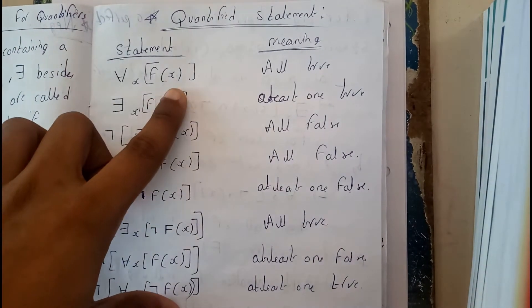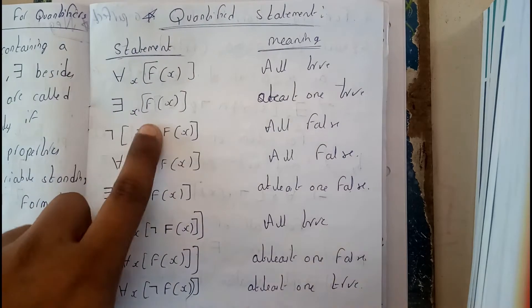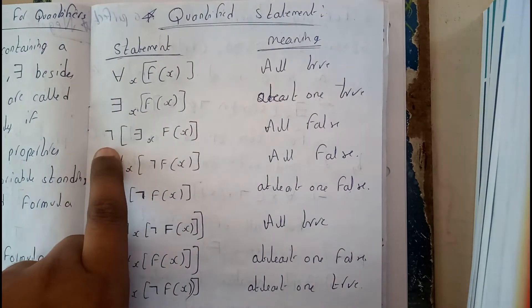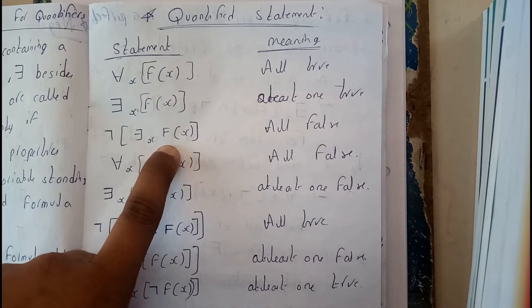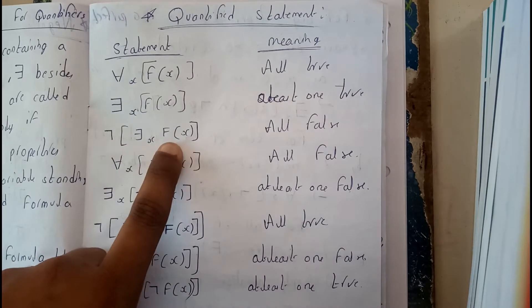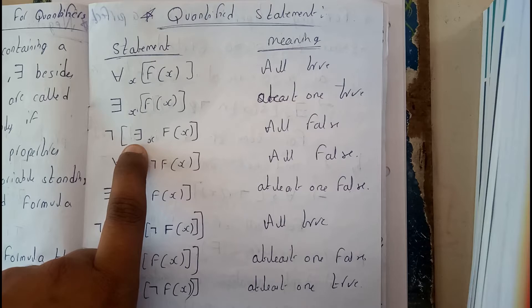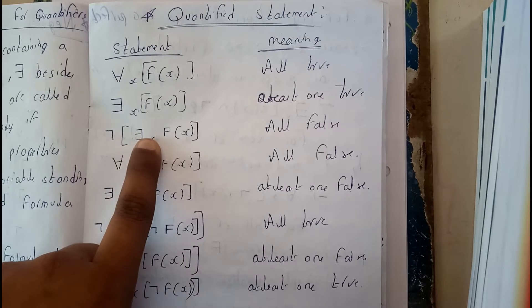Taking the first one: for all f of x, so all are true. For some f of x, at least one is true. Negation of for all are true, so this negation means all are false. That's it, right.